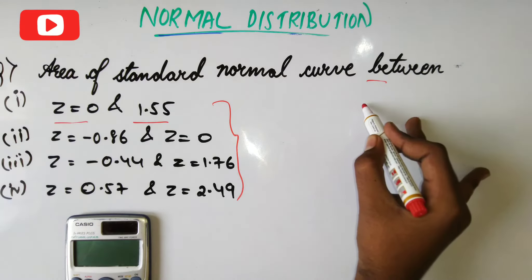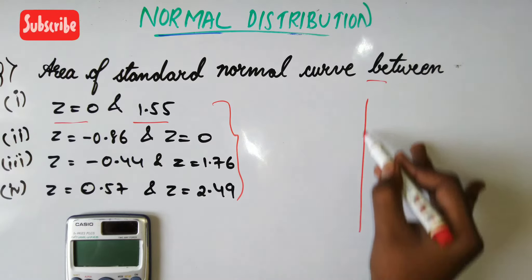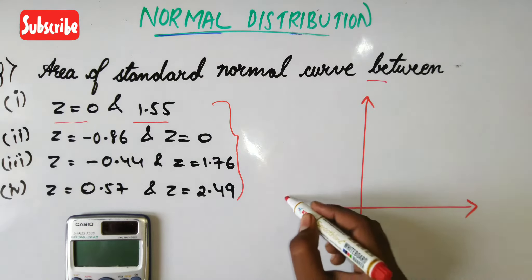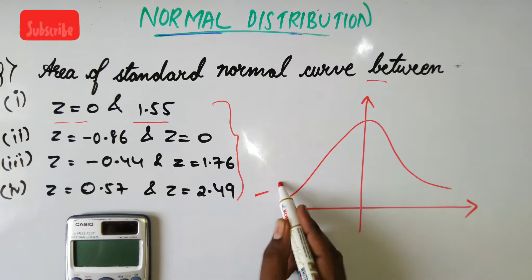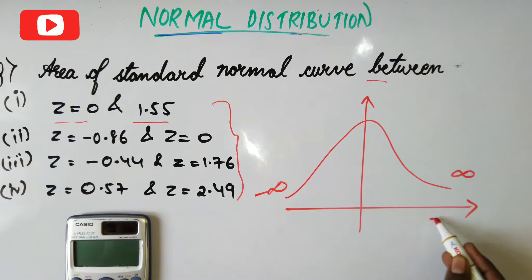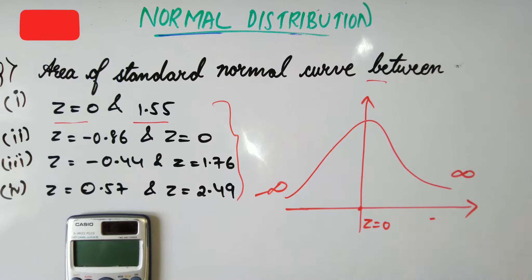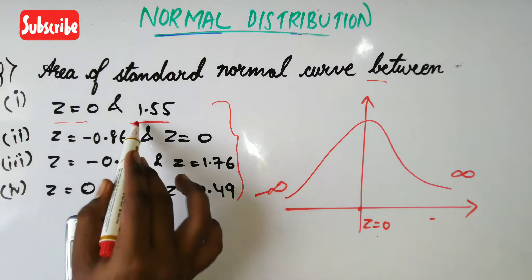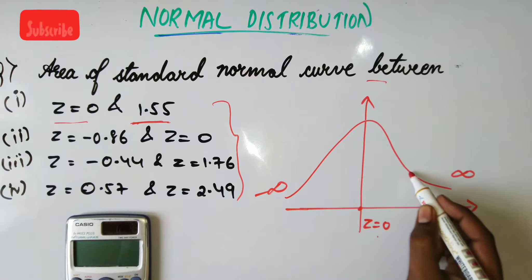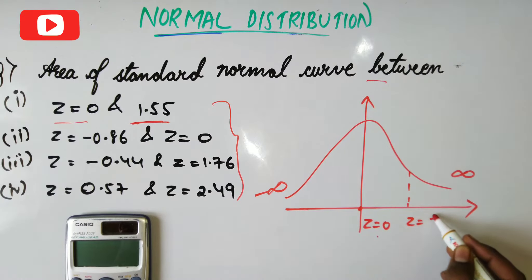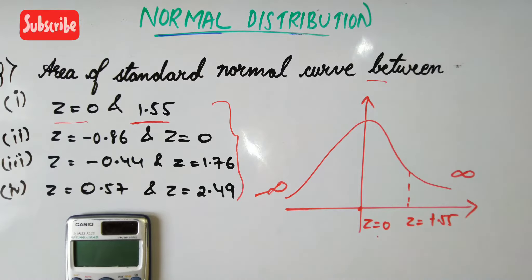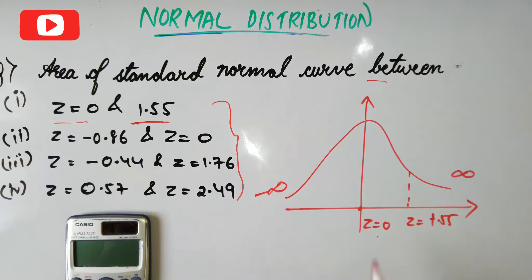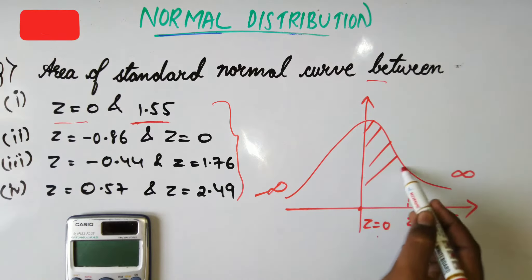I'll draw a bell-shaped curve first to analyze the problem. It varies from minus infinity to infinity in terms of z values. Here this point is z equals zero. We have to go from z equals zero to z equals 1.55, which is somewhere around here. We need to calculate the area between these two values, 0 and 1.55.